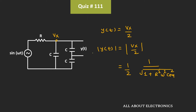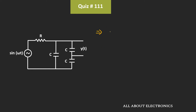We have been given that the amplitude of Y(t) is equal to 0.25, that is equal to 1/4. Simplifying further, 1 divided by √(1 + R²·C_eq²·ω²) equals 1/2. Taking the square on both sides, we get 4 equals 1 plus R²·ω²·C_eq². That means ω² is equal to 3 divided by R²·C_eq².